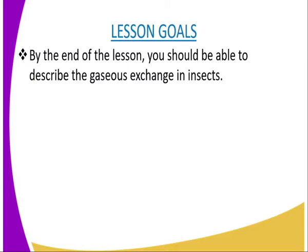I'm going to give a brief description of the gaseous exchange generally in insects. Insects are generally small animals. The small size is quite advantageous in terms of gaseous exchange, since their surface area to volume ratio is large. However, being larger than organisms like protozoans — for example, amoeba — there is need for the development of a breathing system. This system is made up of a large network of air tubes known as the tracheal system, which penetrates into all parts of the body to improve on the efficiency of gaseous exchange.